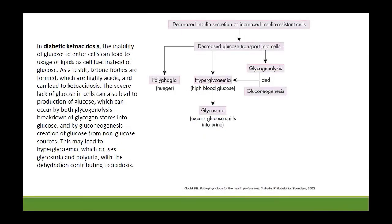Diabetic ketoacidosis is another acute complication, more common in type 1 diabetics, due to decreased insulin secretion. Glucose doesn't enter the cells and remains in the blood, causing hyperglycemia and glycosuria — glucose appears in the urine. When glucose spills into the urine, it takes water with it, causing dehydration. That's why these patients have polydipsia; they drink more water because they're losing a lot of water through the kidneys.